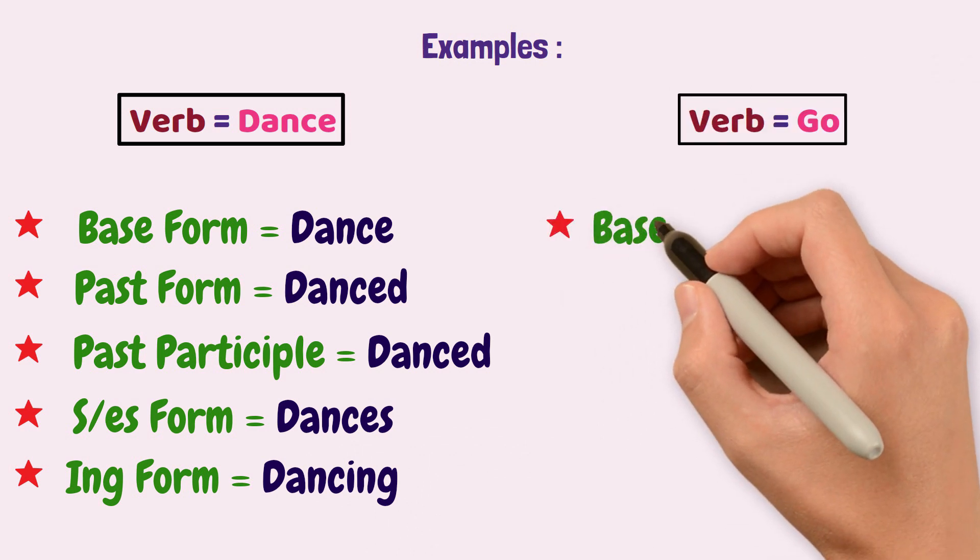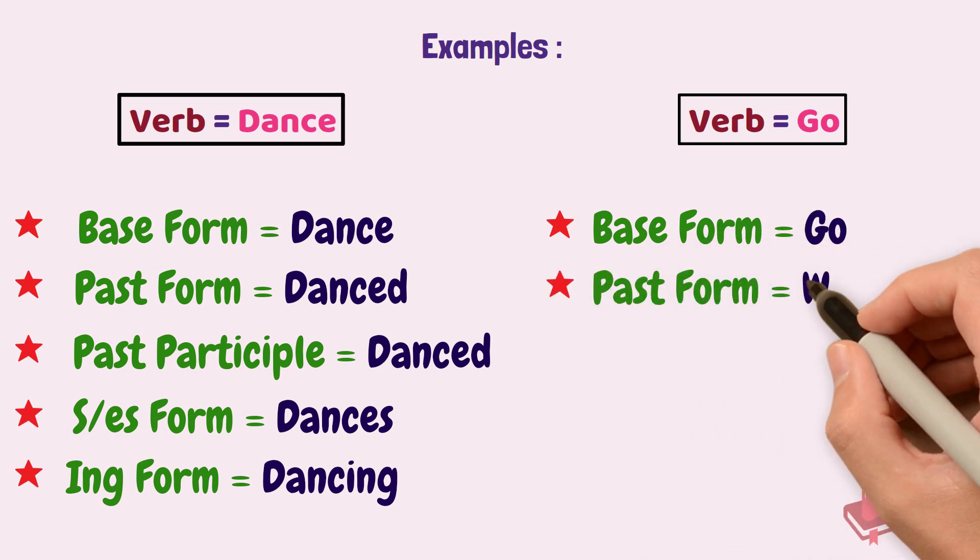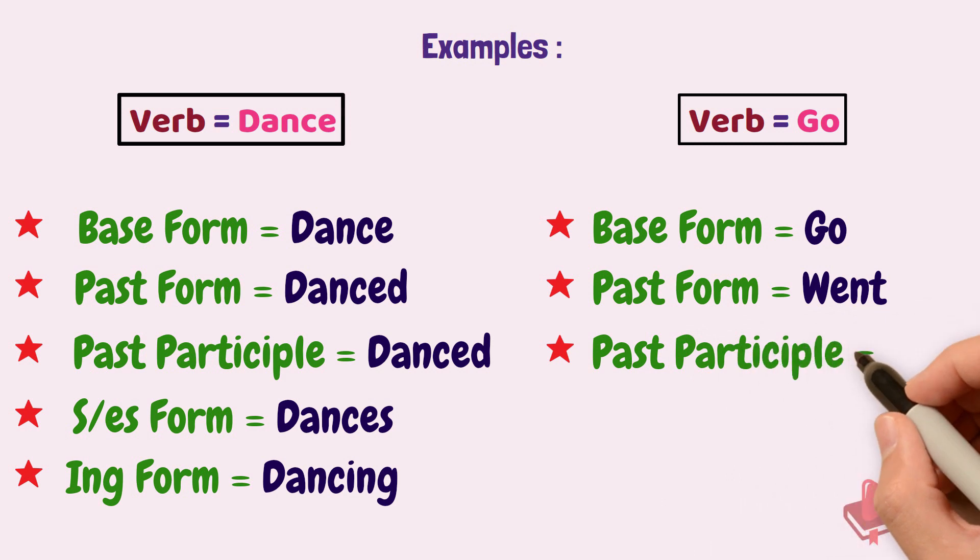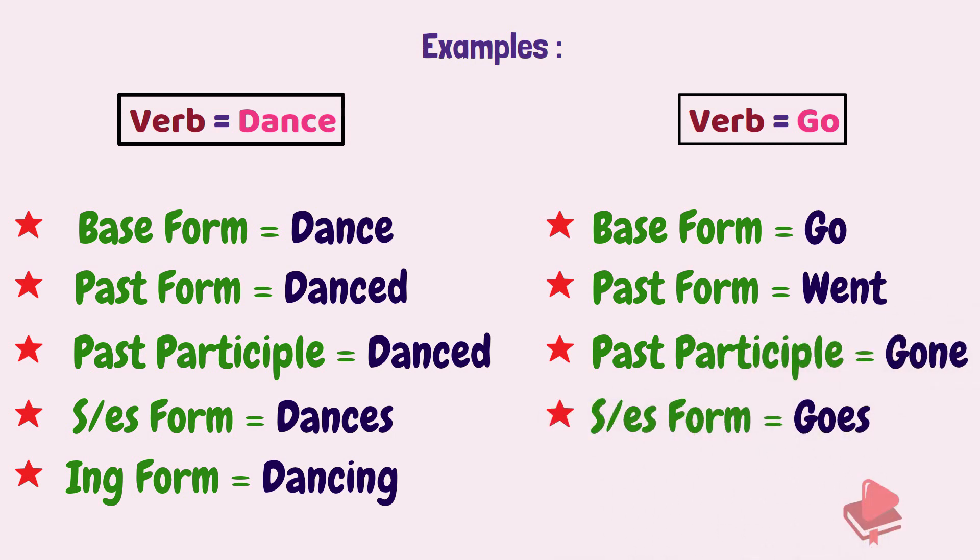The base form of go is go, the past form will be went, the past participle will be gone, the S or ES form will be goes, the ING form will be going. Hope you are clear with the verb form.